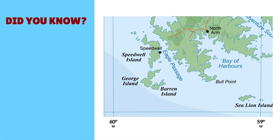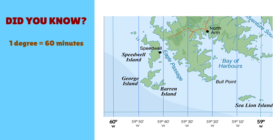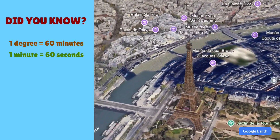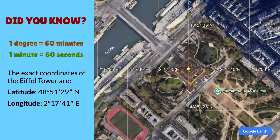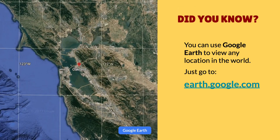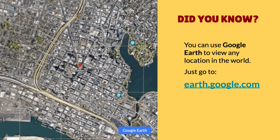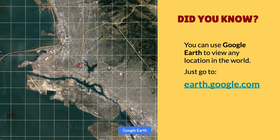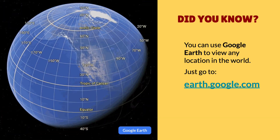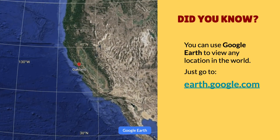We've talked about degrees, but how do we measure the area between degrees? Every degree is divided into 60 units called minutes, and every minute is divided into 60 units called seconds. So you can find a very precise global address for any location, like the Eiffel Tower. If you want to try a really cool way to view maps, you can use Google Earth, which lets you explore anywhere on the planet — from a view of the whole world all the way down to your home, your school, or any place you'd like to visit. Just go to earth.google.com, do a search, zoom in, zoom out, and check it out.